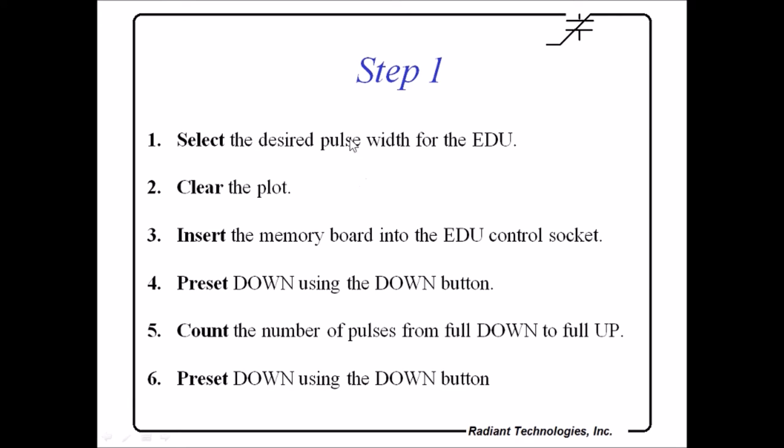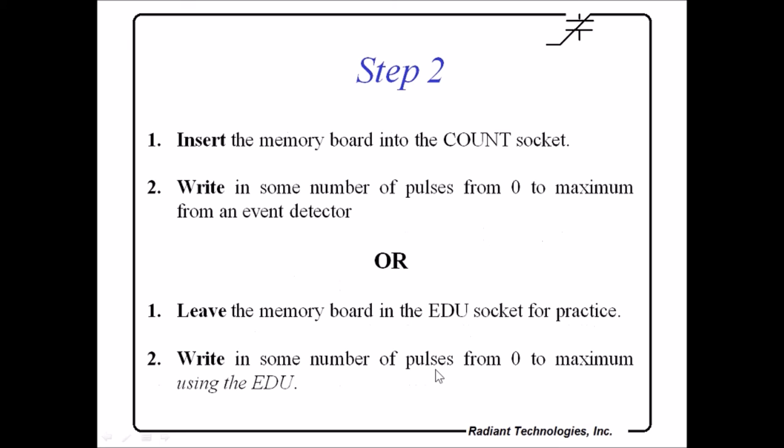So, step one, let's go through it in detail. Select the desired pulse width for the EDU to execute on its arbitrary waveform generator. I'll demonstrate that later. Clear the EDU plot. Insert the memory board into the EDU control socket. Preset it down using the down button. Then put in multiple pulses to count how many are required to pass the threshold voltage. Then preset the capacitor down again with the down button. It's now ready to go where you want to count. In this case, you can put in the count socket. Write some number of pulses from zero to maximum in it with your sensor, your event detector, your pulse generator. Or you can leave it in the memory board in the EDU socket for practice and write some number of pulses with the EDU.